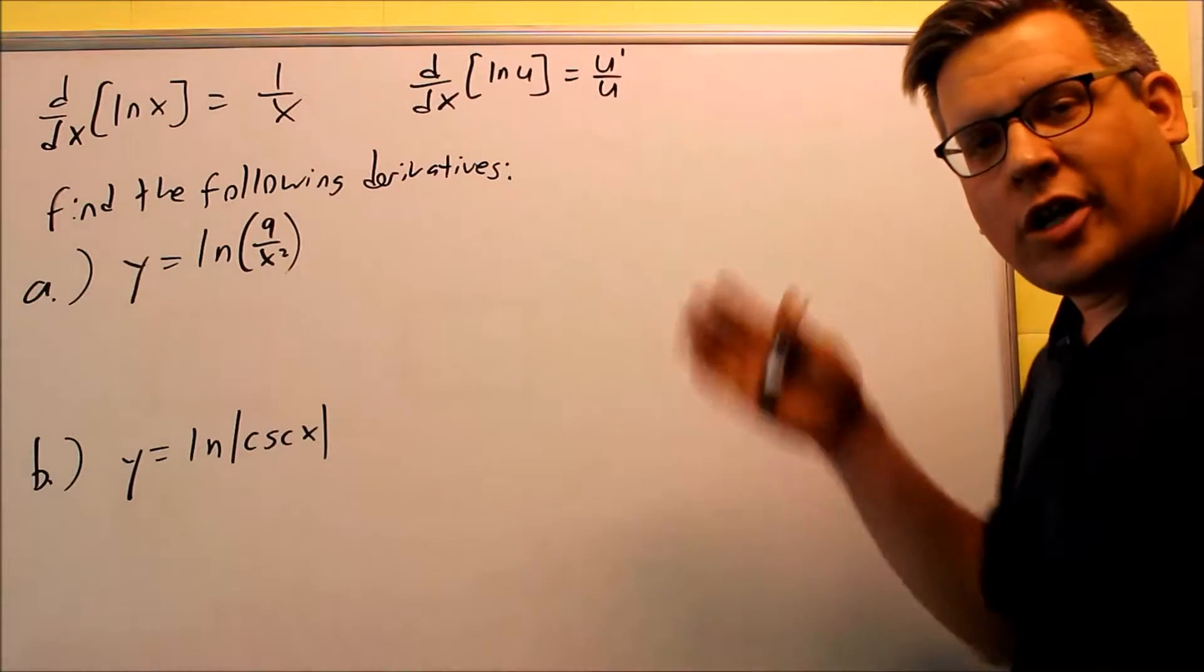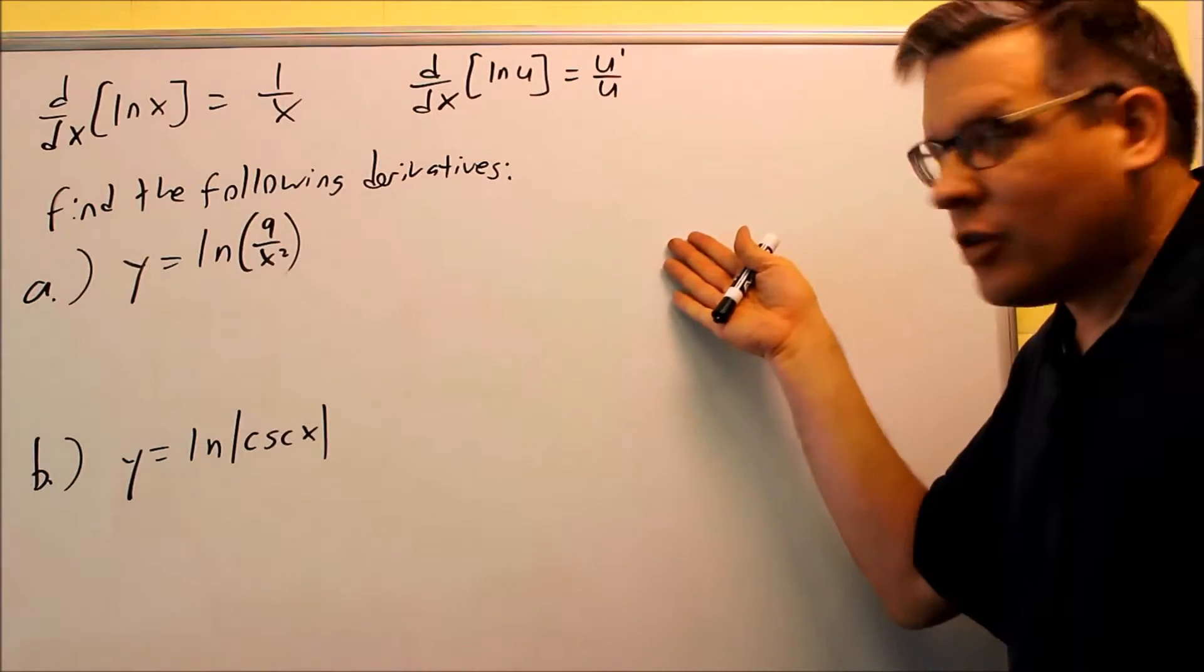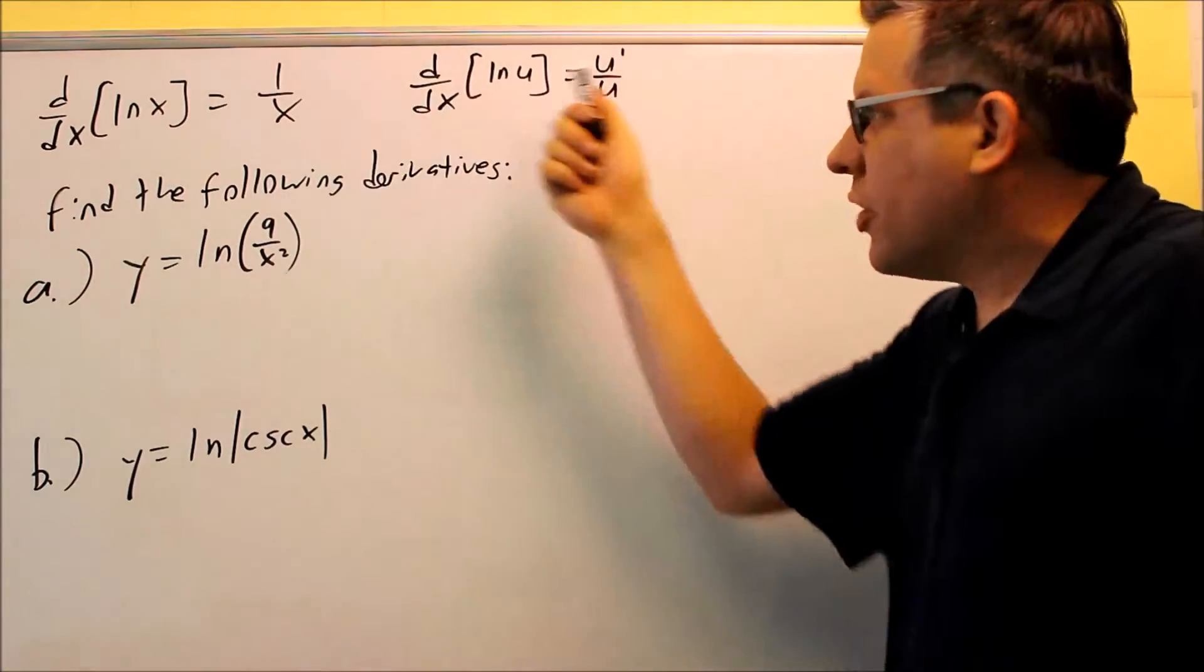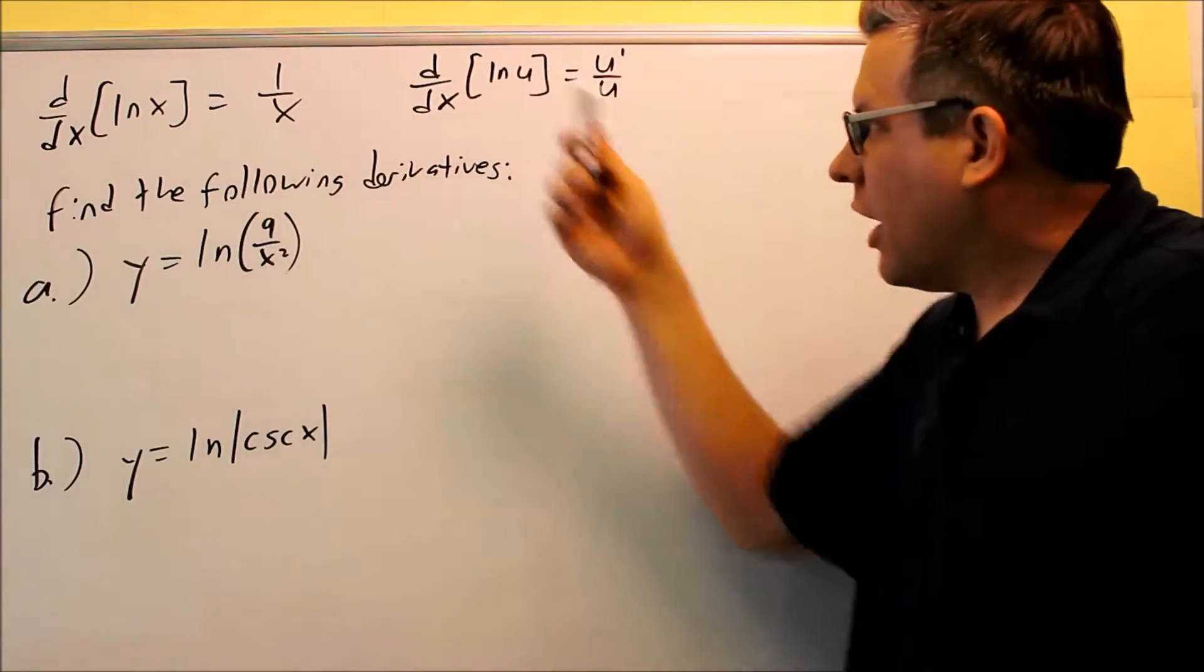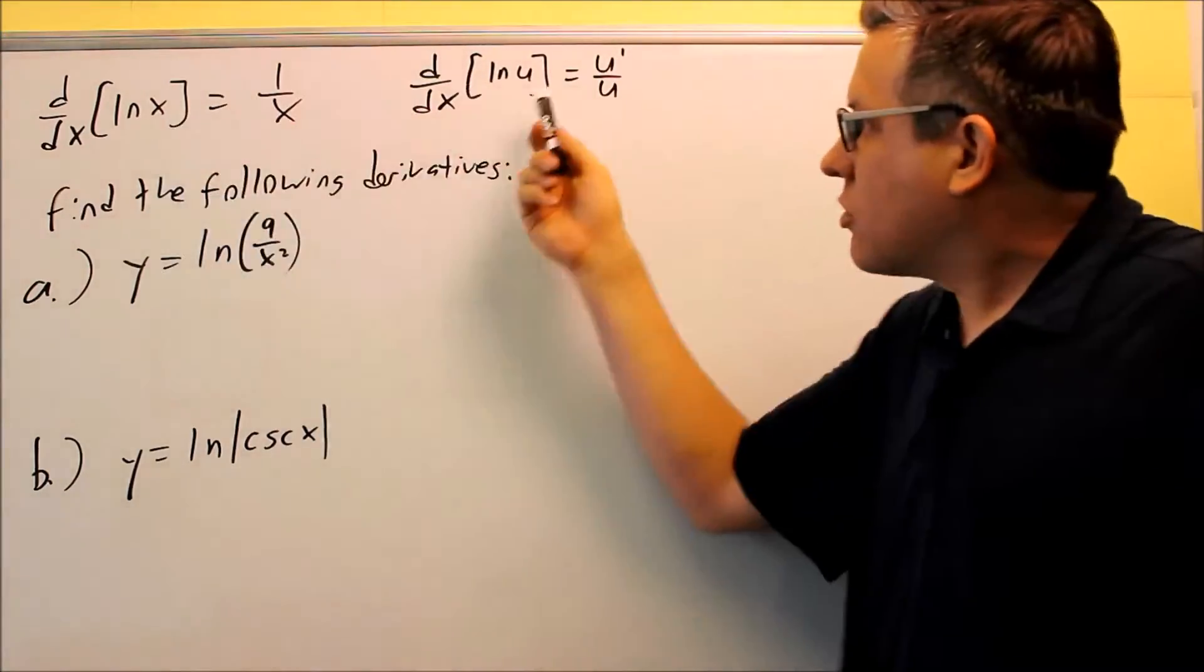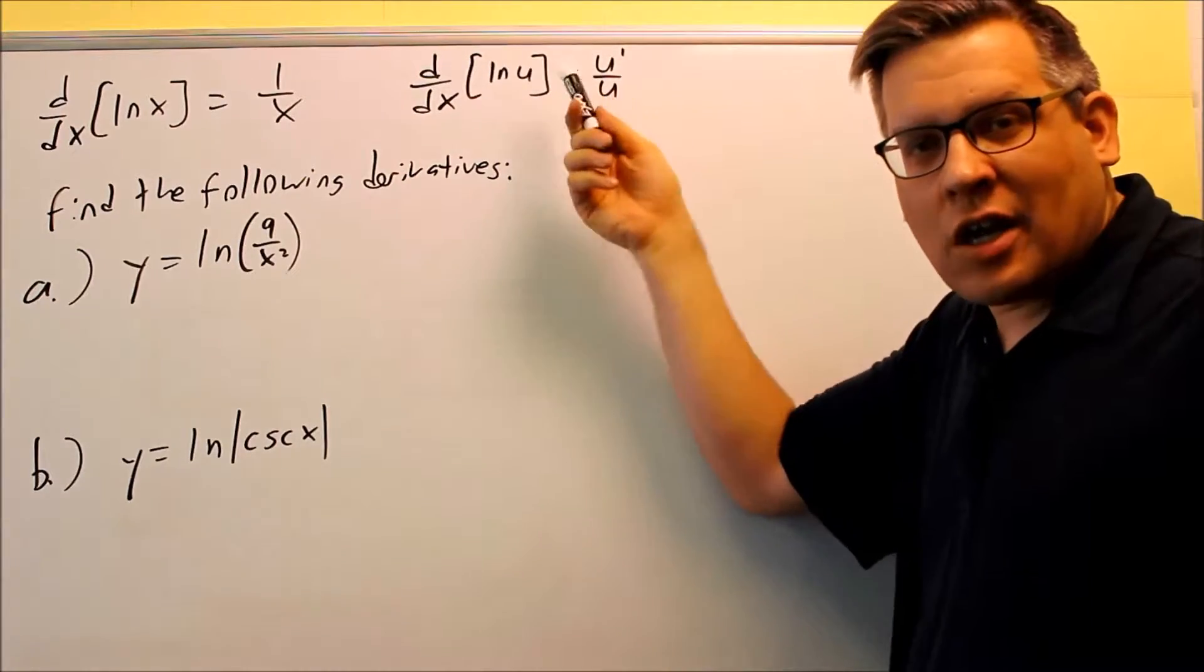Now that we've reviewed the log properties, we're ready to finally get into the calculus part of it. So here are the derivatives for your natural log of x, and then also if you have something else inside that's not an x, we have a chain rule.